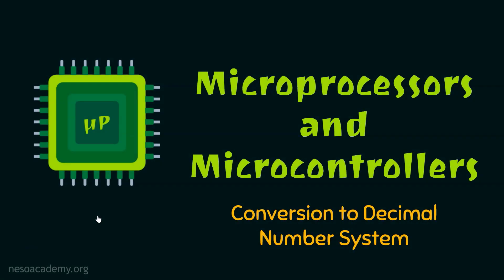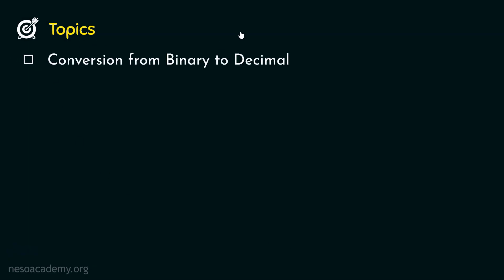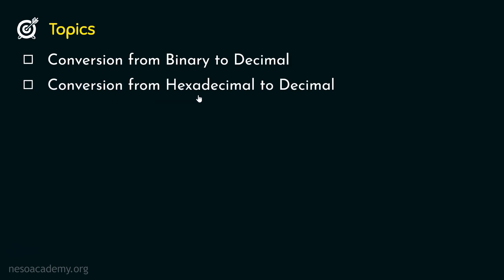Hello everyone and welcome back. In the previous session we learned about the hexadecimal number system. Today we are going to learn about the conversion to the decimal number system. The topics we will cover are: first, conversion from binary to decimal, and thereafter, conversion from hexadecimal to decimal.